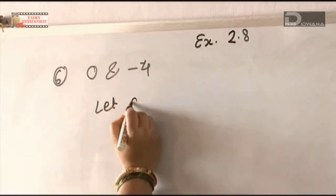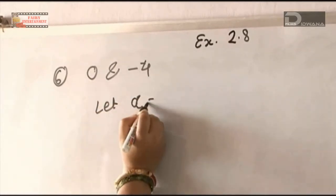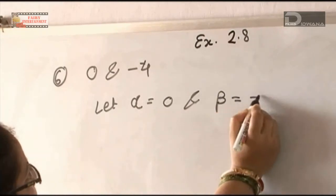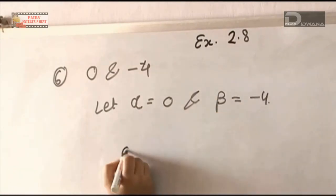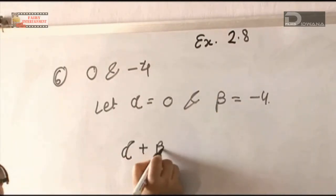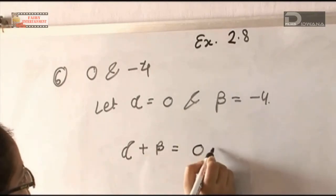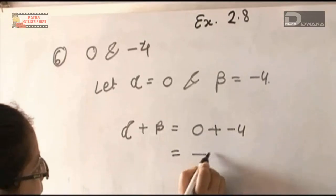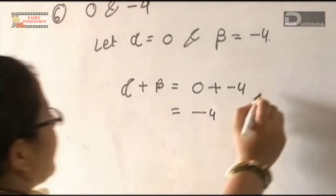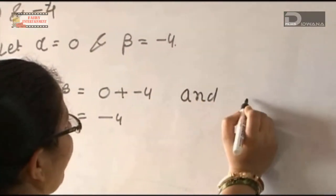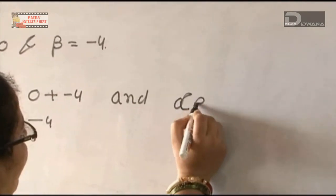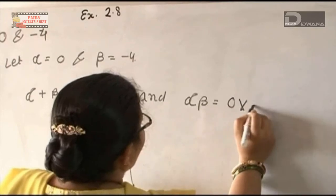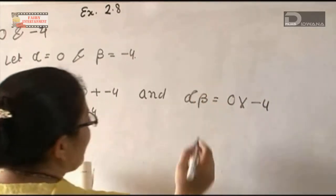Let alpha equal to 0 and beta equal to minus 4. Alpha plus beta equals 0 plus minus 4, which gives minus 4. Alpha times beta equals 0 multiplied by minus 4. If 0 is multiplied by any number, the answer will be 0.